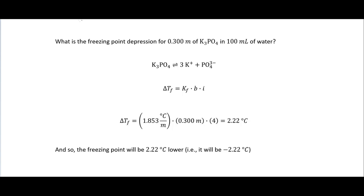As an example: what is the freezing point depression for 0.3 molal K3PO4? K3PO4 splits into four ions, so i = 4. Using KF = 1.853 for water, ΔT = 1.853 × 0.3 × 4 = 2.22°C, meaning the freezing point is 2.22°C lower. This is why we salt roads in winter — adding salt reduces the freezing point of water so ice becomes liquid at a lower temperature.